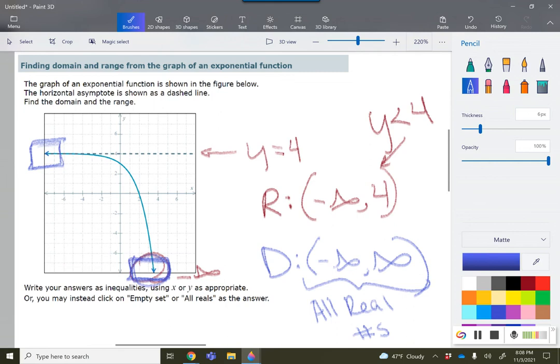If there isn't an asymptote that affects that area, such as here where our asymptote affected the y's but not the x's, for the domain you're looking to see: are there arrows on both sides? Does it seem to stop and not keep going somewhere? That will help you tell if it's all reals or if it has a restriction from an asymptote.